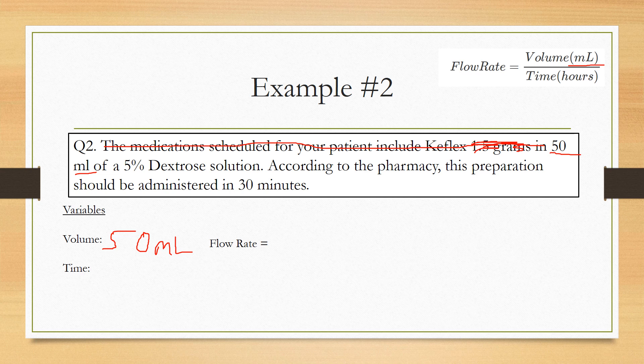According to the pharmacy, this preparation should be administered in 30 minutes. We've got a bit of a problem here because 30 minutes is not in the correct unit that we have to use for this formula. It needs hours. So how many minutes are in an hour? 60. So we have 30 minutes, that's 30 divided by 60, which is 0.5. 30 minutes is half an hour, so it's 0.5 hours.